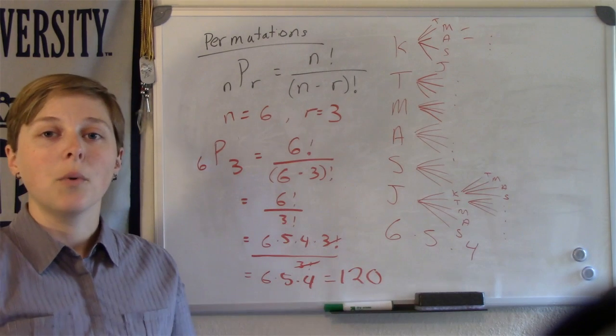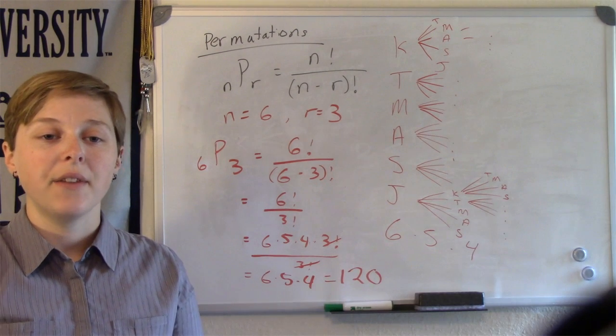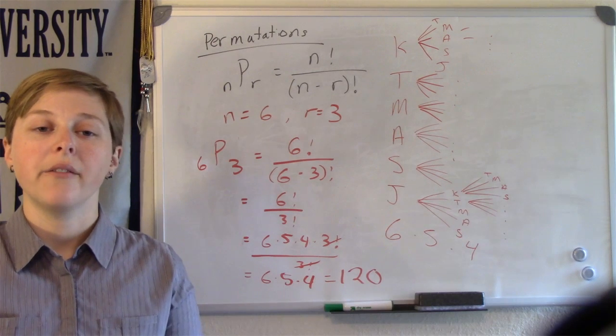There are 120 ways that I could select three favorites—first, second, and third—out of six friends.